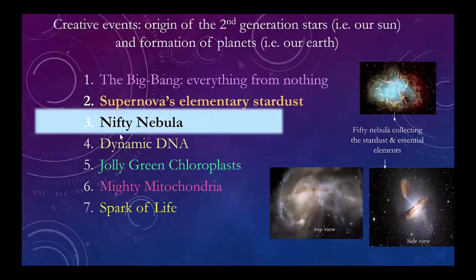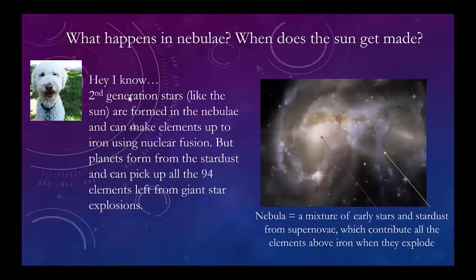The nebulae are the secondary-generation star formers, and they include all the elements. It starts as a supernova and the nebula has a center part and a peripheral part we call the protoplanetary disk. Second-generation stars like the Sun are formed in the nebula. They can make all the elements up to iron in the star, but the planets form from the stardust. At least our planet picked up all 94 elements from our specific nebula.